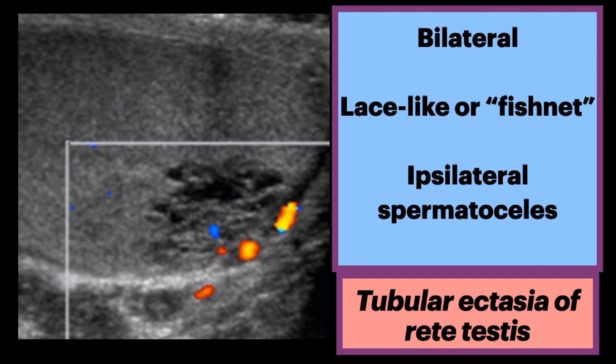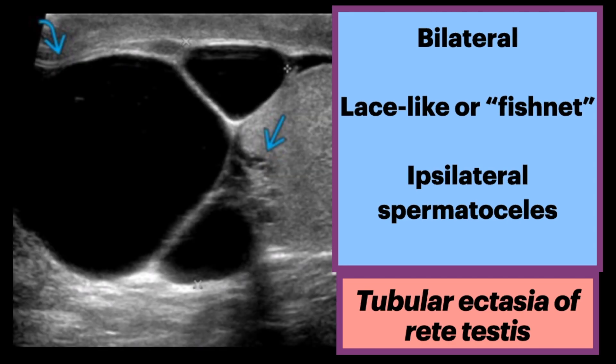The adjacent parenchyma is normal, and there are common associations with ipsilateral spermatoceles. As seen here on this sagittal grayscale ultrasound of the epididymal head, we see large spermatoceles denoted by the curved arrow. There is also partial visualization of tubular ectasia denoted by the straight arrow.